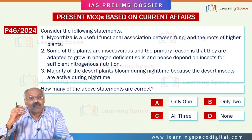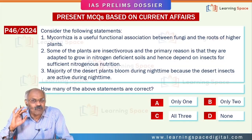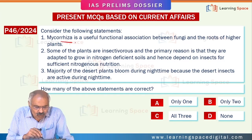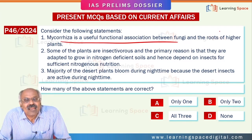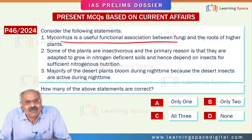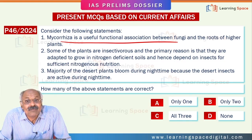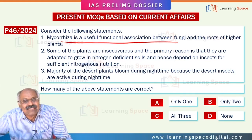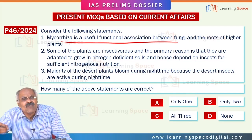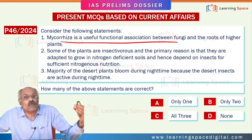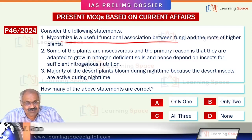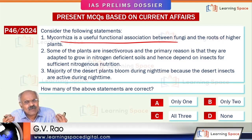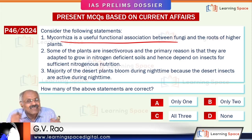There are three important aspects mentioned here. One is mycorrhiza, which is present in the rhizosphere — the root system of plants. This mycorrhiza fungal is found in several plant root systems. It has a symbiotic relationship with plants.